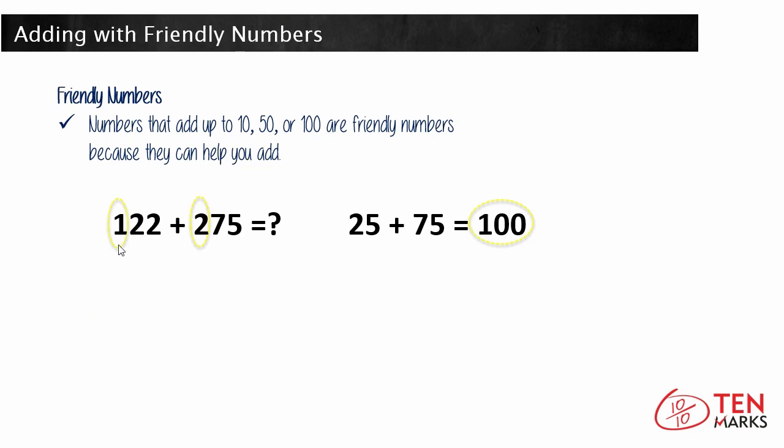Now, take the 100 from the 122 and the 200 from 275 and add those two friendly numbers together. 100 plus 200 equals 300.